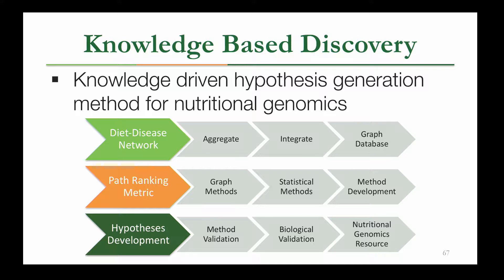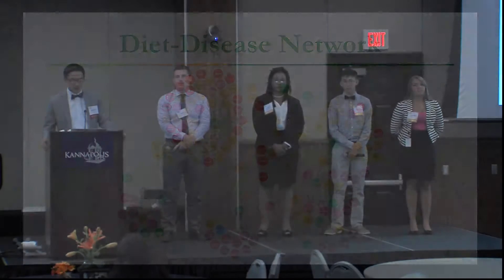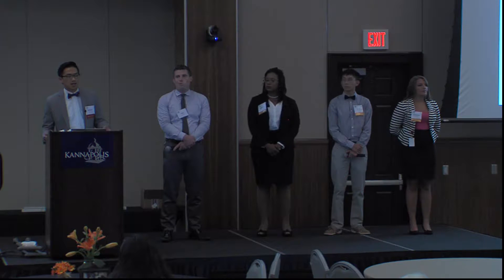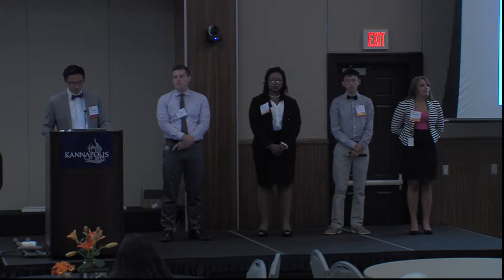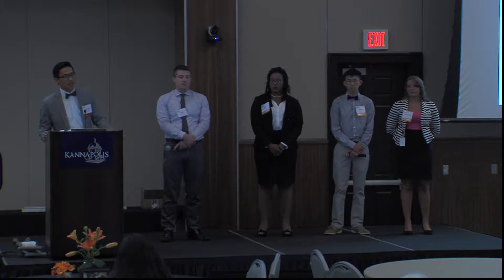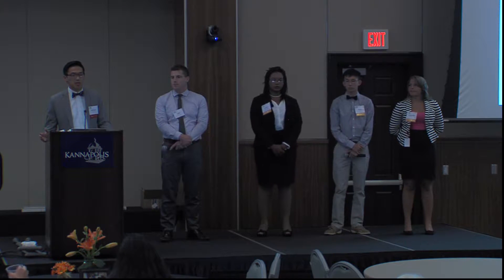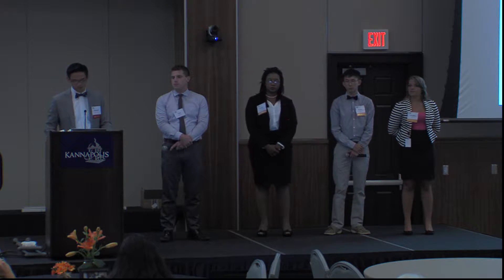The first part I wanted to talk about is the development of the diet-disease network, which is previous work we've done in prior summers. We've developed this diet-disease network from a variety of different sources, aggregating entities in biomedicine as well as entities in agriculture, along with the relationships that connect all these different entities. It's pretty difficult to generate because we're aggregating and integrating data from multiple heterogeneous sources.